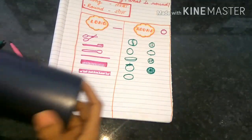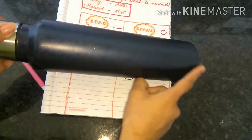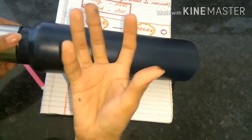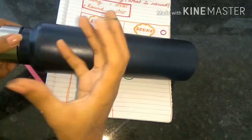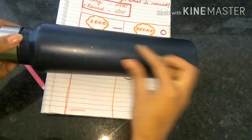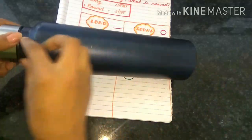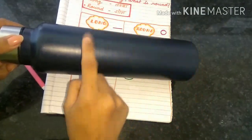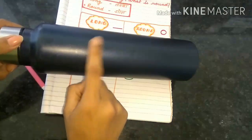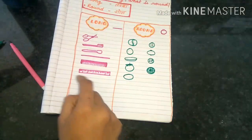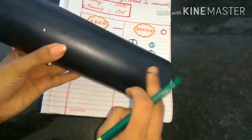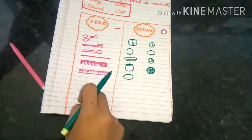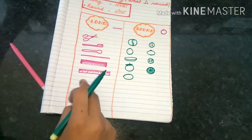The next object I have is this water bottle. You can see how it is. Is it looking long or round? Yes, this is long. So we are going to draw it on the long side. This water bottle belongs to this category.